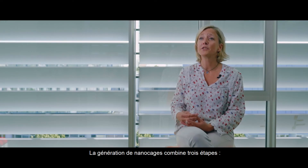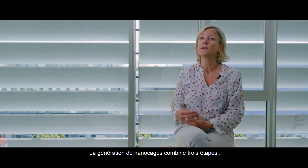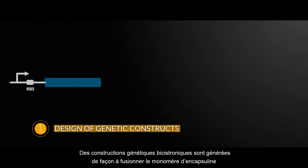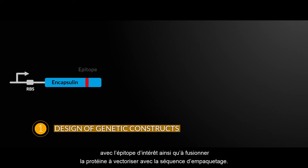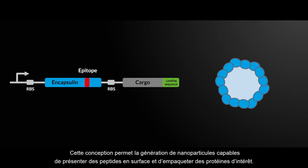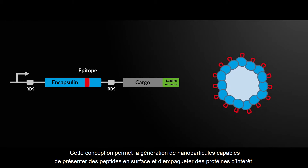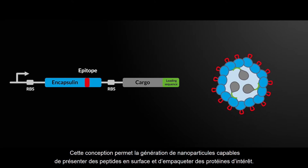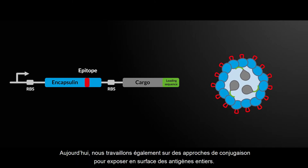Nanocage generation combines three steps. Bicistronic genetic constructs are designed encoding Encapsulin monomers fused to the epitope of interest, while the cargo protein is fused to the loading sequence. This design allows nanoparticle generation with exposed epitope surface presentation and packaged cargo proteins.